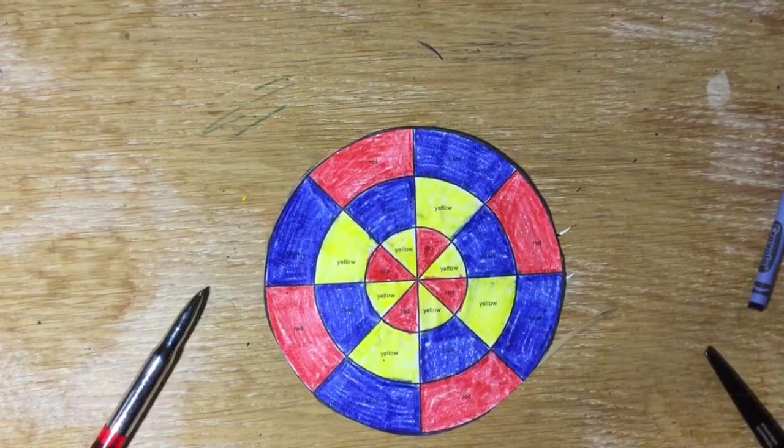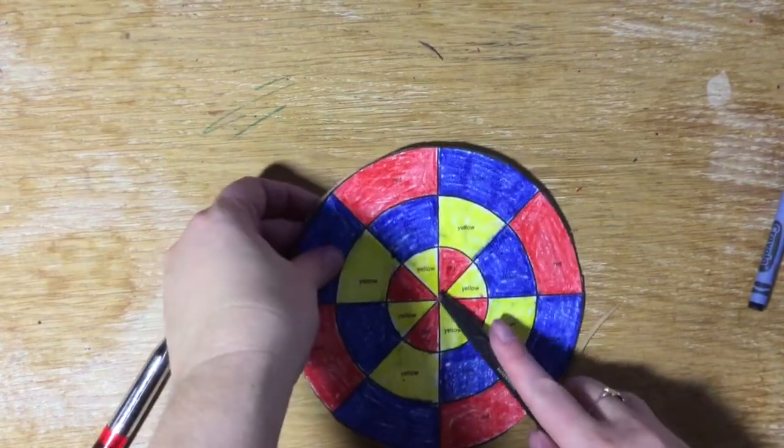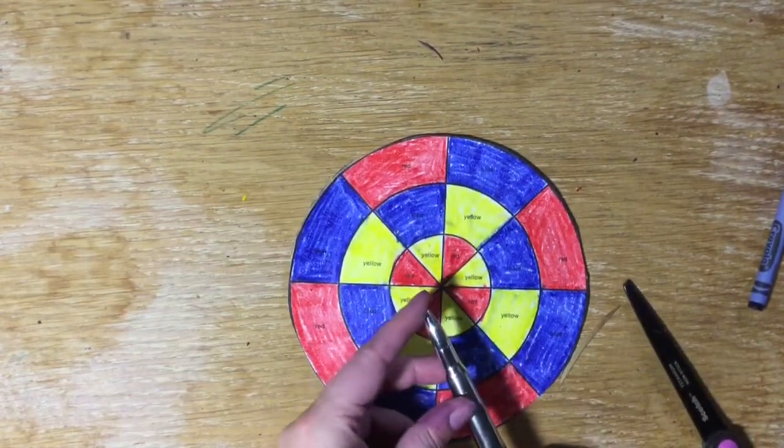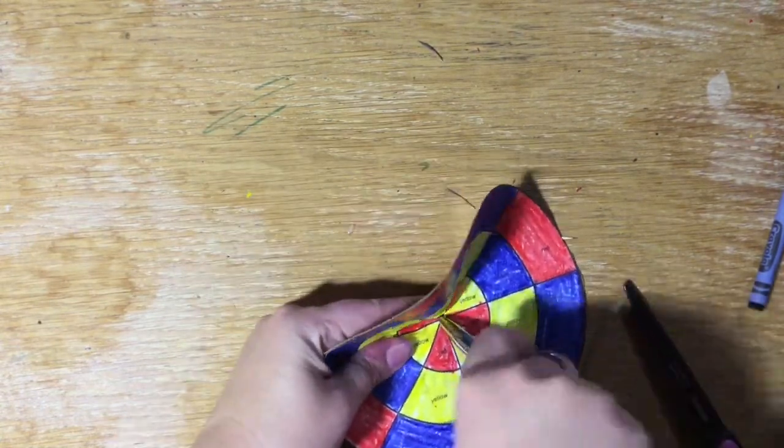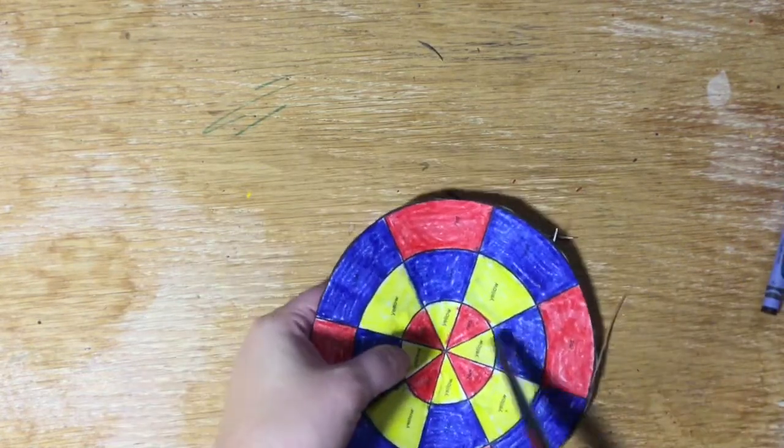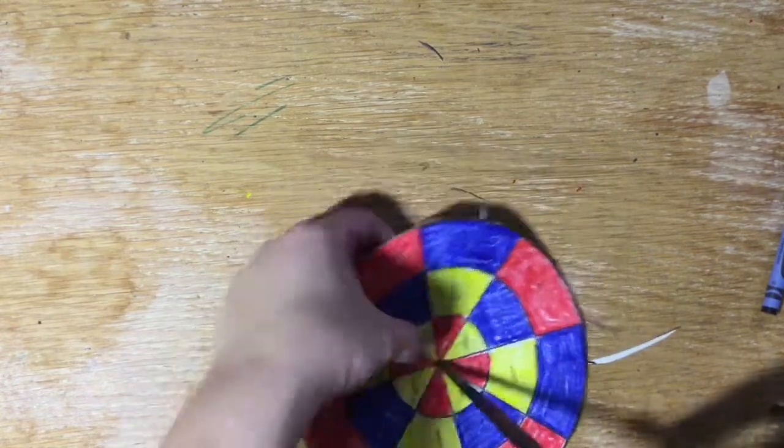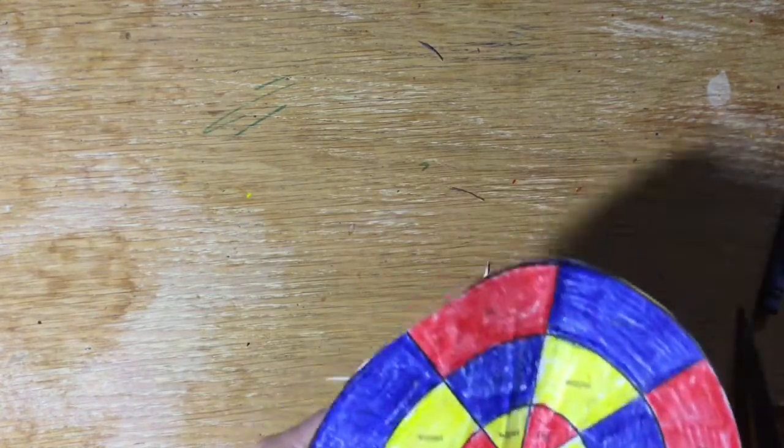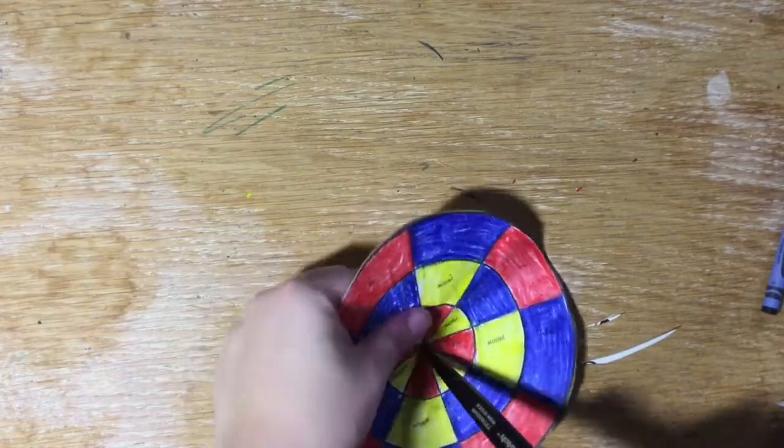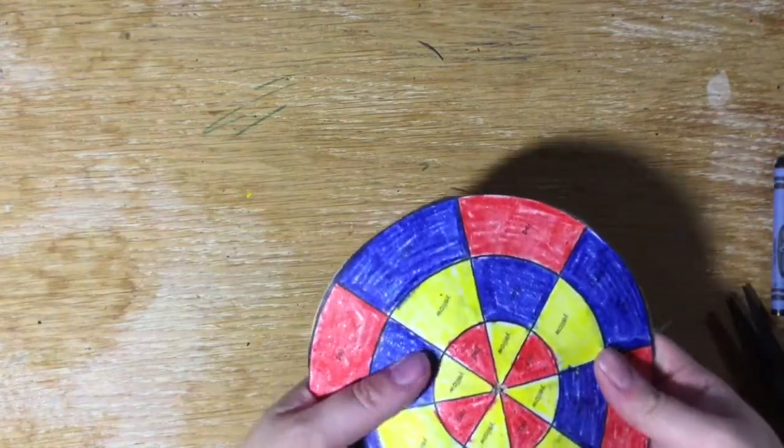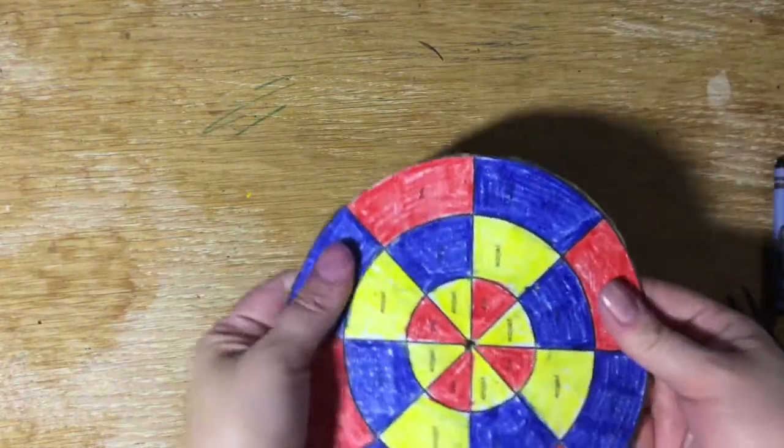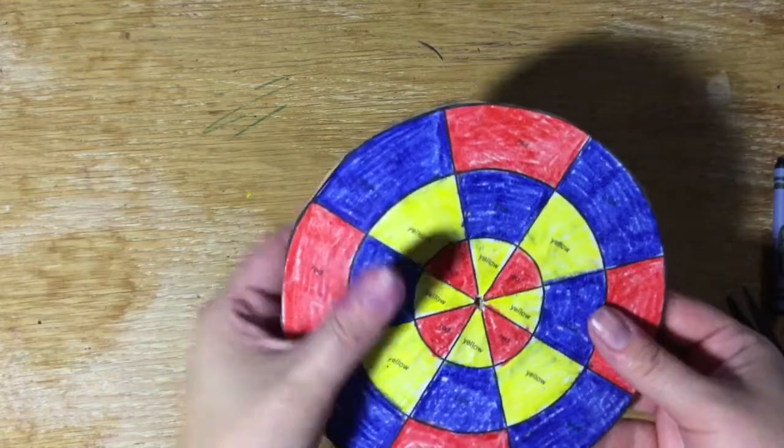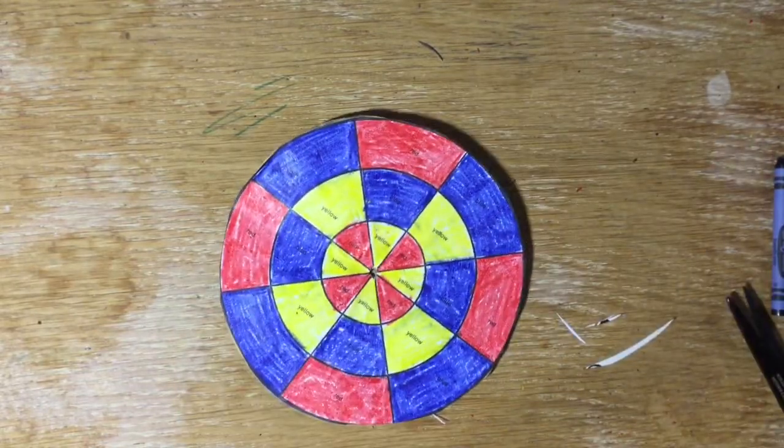So you're gonna want to use either the point of your scissors or a really good solid pin to poke a hole into the middle of your color spinner. And you might need a grown-ups help to do this. So I've got my hole in the middle of my color spinner and now I can stick something in the middle of my color spinner.